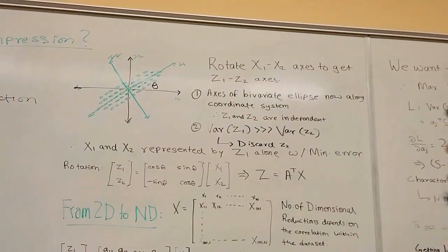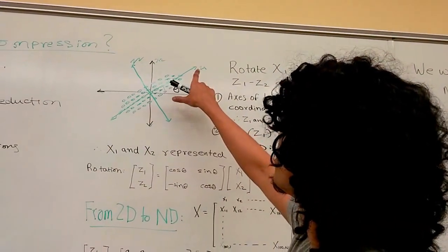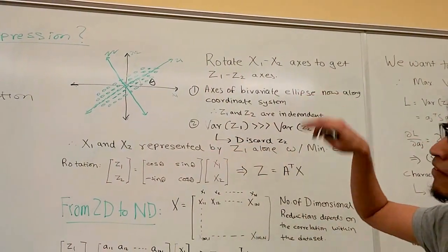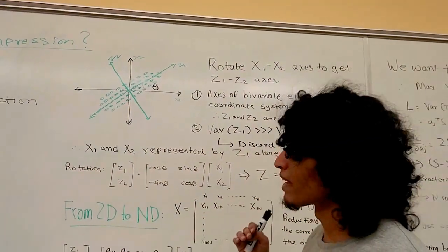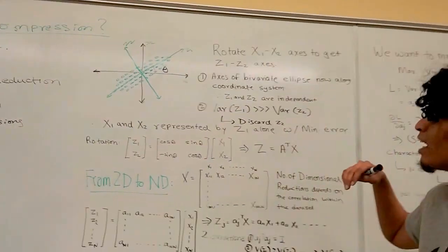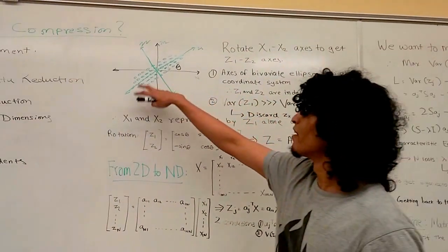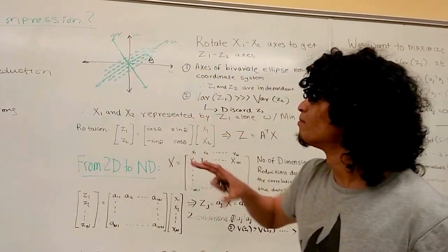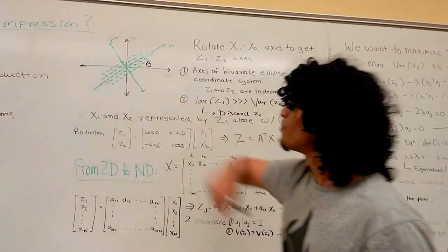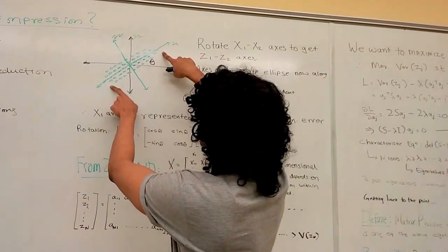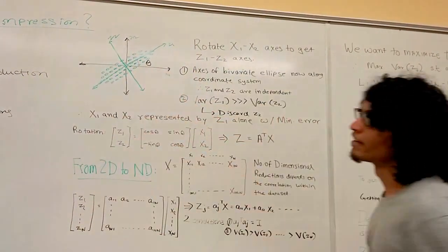So how can we compress this data set? Let's rotate our coordinate system. If we rotate our coordinate system to z1 and z2 such that z1 lies along the direction of maximum variation of the ellipse, something quite interesting happens. Now that the axes of the bivariate ellipse lie along the coordinate system, z1 and z2 are now independent.